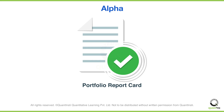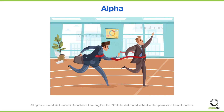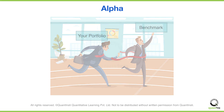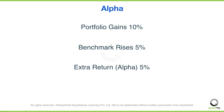Alpha is like your portfolio's report card. It shows how well your portfolio has performed, but it's not just about getting good grades — it's about outperforming the market. Imagine that you're in a race and the market is your competitor. Alpha measures how well your portfolio runs this race compared to the market. So if your portfolio gains 10% and the market only rises by 5%, the extra 5% is your Alpha.